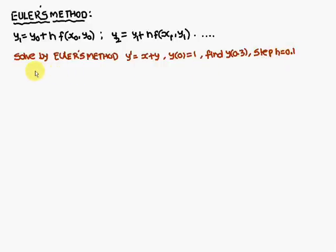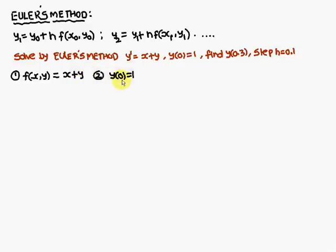First we will consider this problem. The first step: f of x, y is equal to x plus y — as given. Second, y of 0 is equal to 1, which means if x is equal to 0, y value is 1. Therefore, x0 is equal to 0 and y0 is equal to 1.